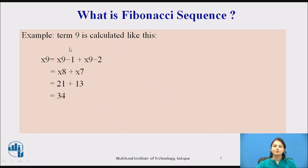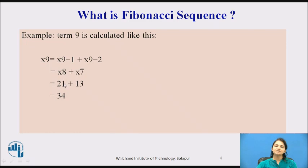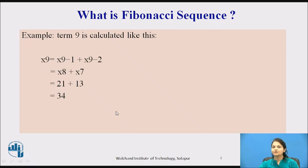One more way we can find it: if I want to calculate term 9, I have to use the previous two terms, that is term 9 minus 1 and term 9 minus 2. So term 8 is 21 and term 7 is 13, giving 34. If we know the previous terms, it is very easy to calculate the next Fibonacci term.